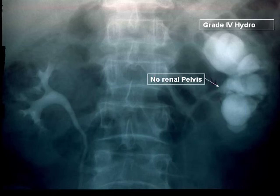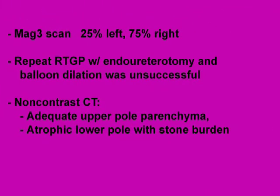Notice the diminutive renal pelvis and the significant obstruction. At that time, his renal scan showed 25% function of the left kidney. A retrograde was performed and an attempted endoureterotomy was performed with balloon dilation.